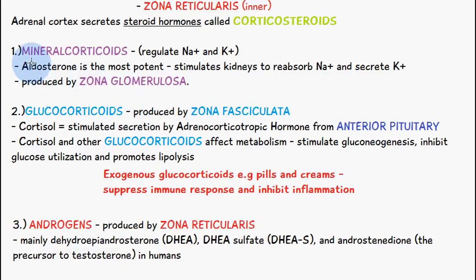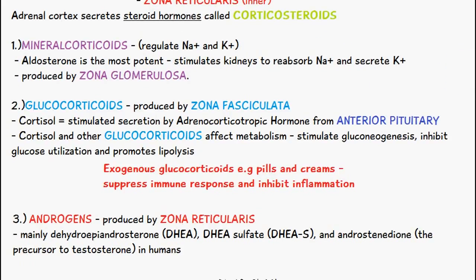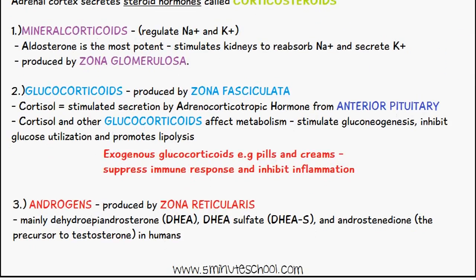The first type, from the zona glomerulosa, is mineralocorticoids, which regulate sodium and potassium levels. Aldosterone is the most potent of these; it stimulates the kidneys to reabsorb sodium and secrete potassium. A separate video on aldosterone will be linked in the description below.